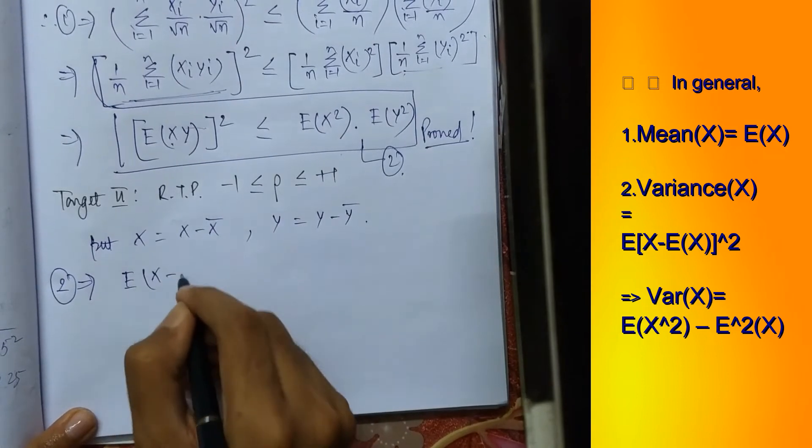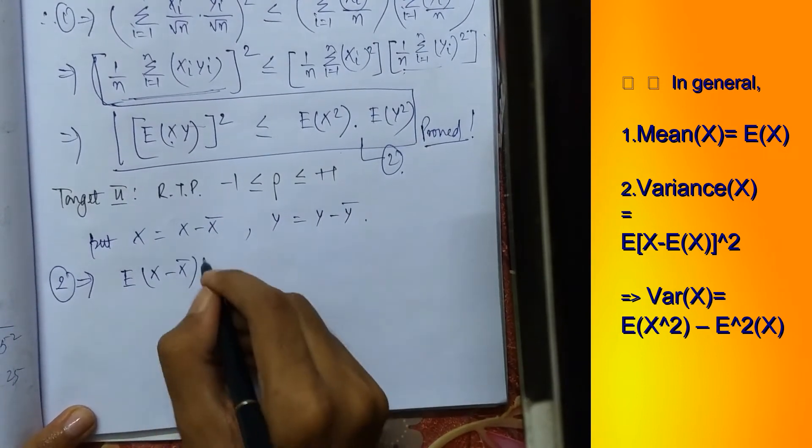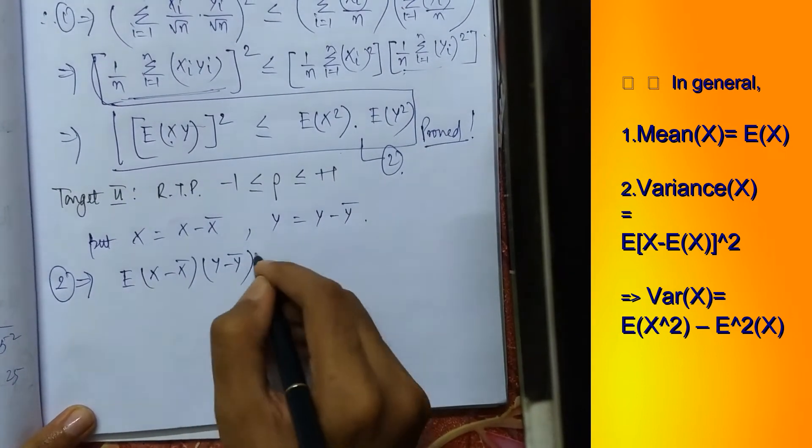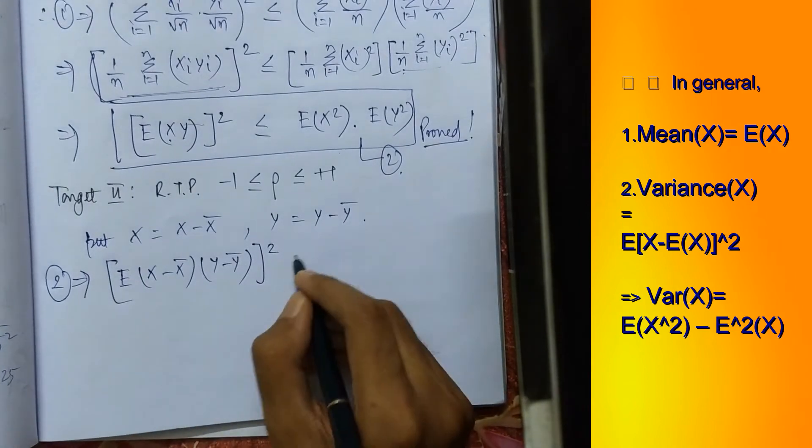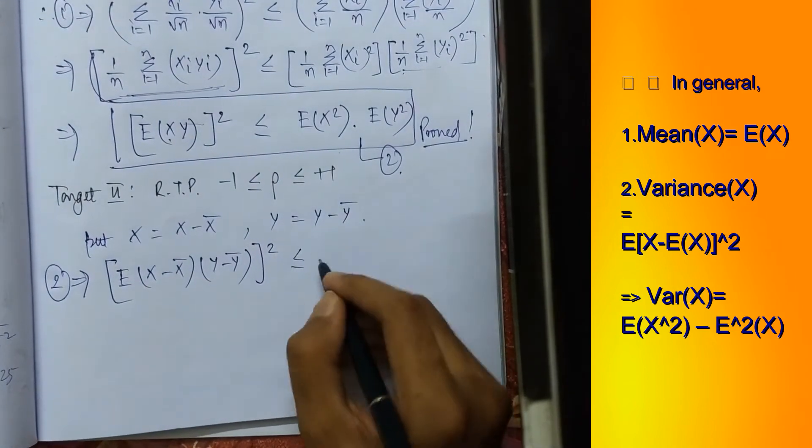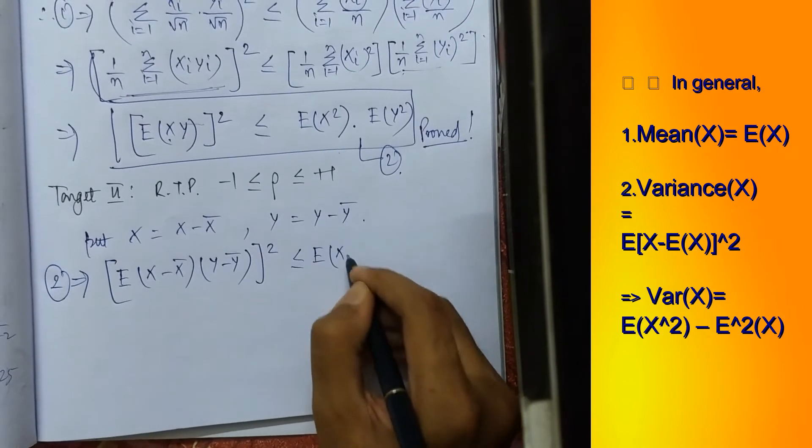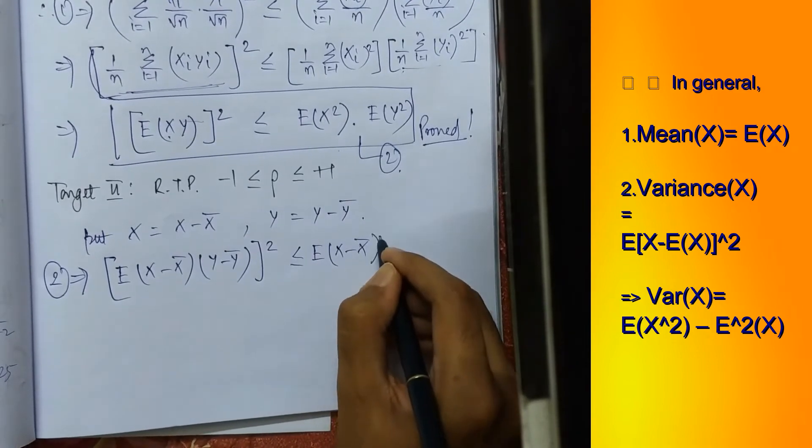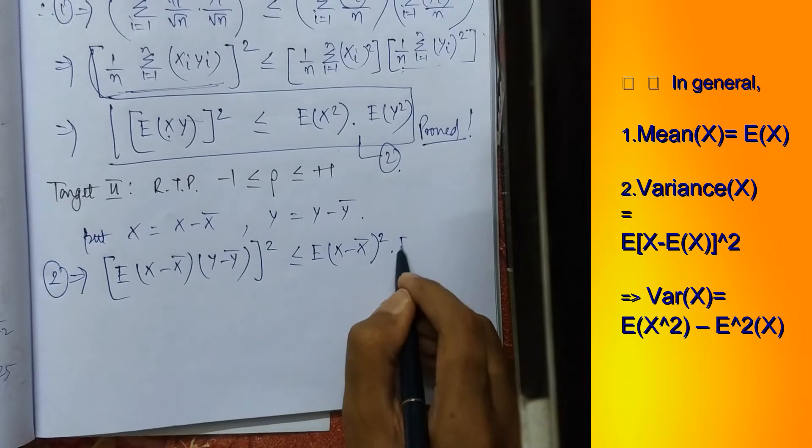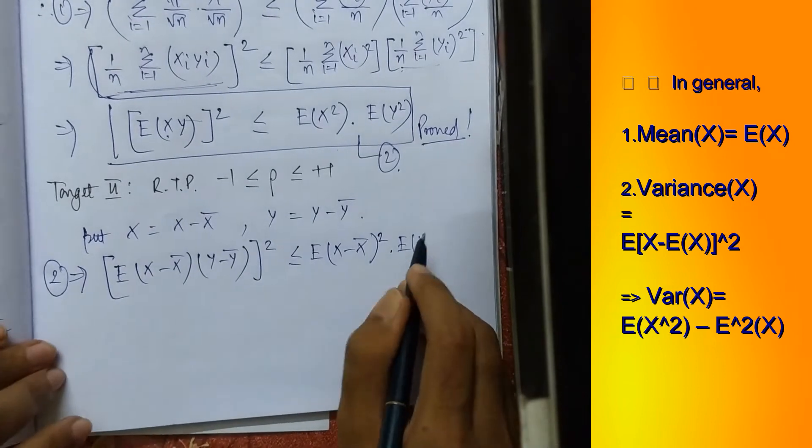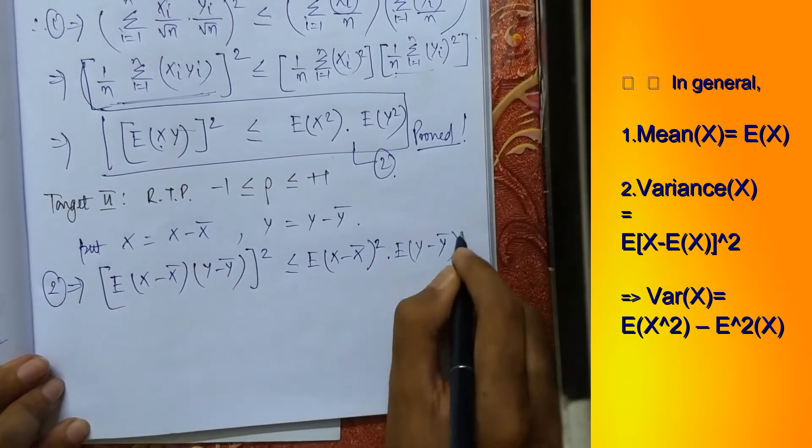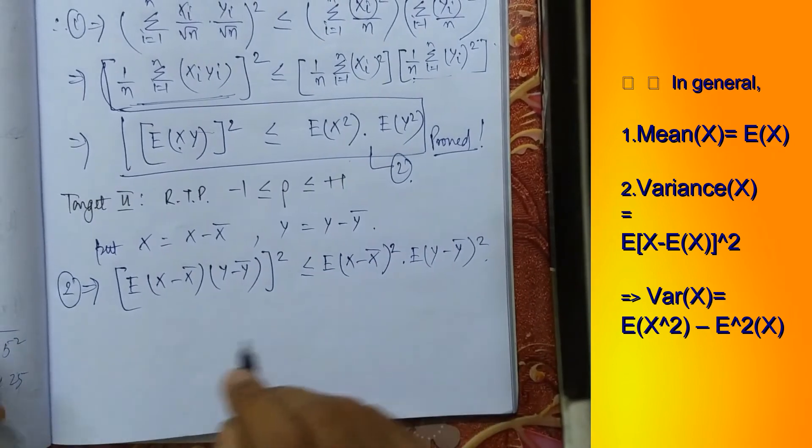Expectation of x minus x bar into y minus y bar whole square, this is less than equals expectation of x minus x bar whole square into expectation of y minus y bar whole square. Done.